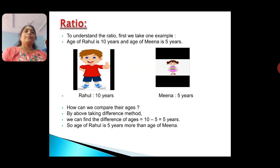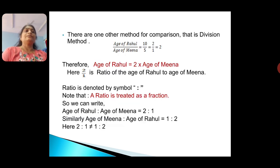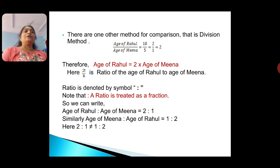Now, ratio. To understand ratio, let us take one example. Suppose Rahul's age is 10 years and Mina's age is 5 years. How can we compare their ages? By the difference method, the difference of ages equals 10 minus 5, which is 5 years. So age of Rahul is 5 years more than age of Mina. There is another method for comparison — the division method. If we divide age of Rahul by age of Mina, we get 10 by 5, that means 2 by 1, equals to 2.